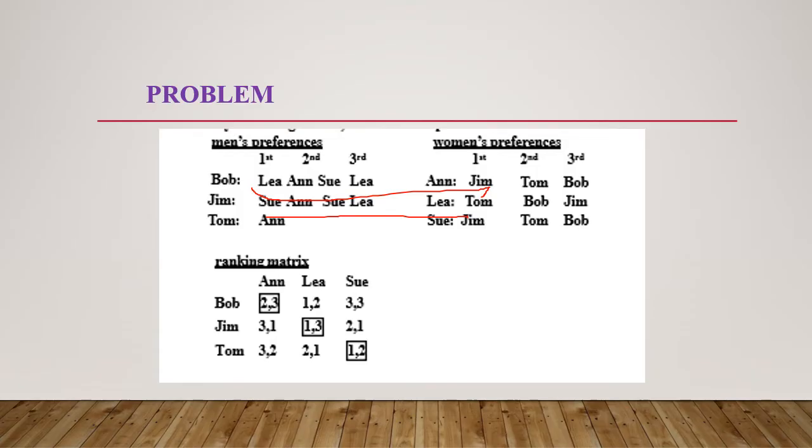Similarly for Jim, Ann is the third preference, and for Ann, Jim is the first preference. For Jim, Lee is the first preference, and for Lee, Jim is the third preference. Based on that, I have constructed the ranking matrix.